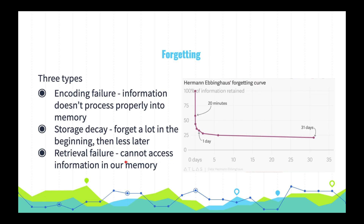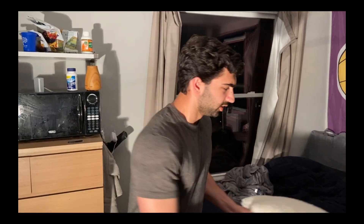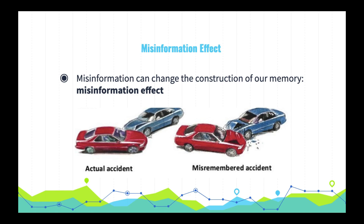Retrieval failure occurs when information is in our memory but we can't access it since we don't have enough retrieval cues. For example: do you know your state capitals? What's the capital of Arizona? Another note: misinformation can change the construction of our memory. If someone sees a light car accident but is then asked leading questions suggesting a more severe accident — like 'how fast were the cars moving when they smashed into each other?' — they will actually begin to remember the accident as more violent than it was. This is called the misinformation effect.